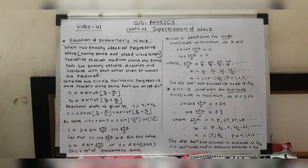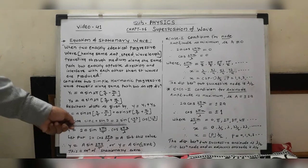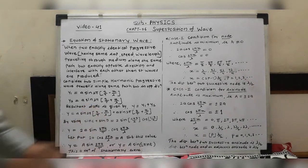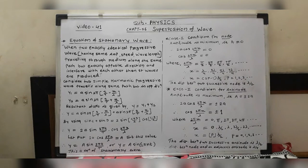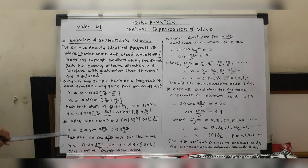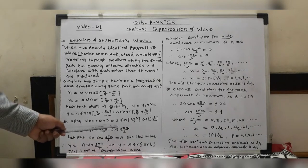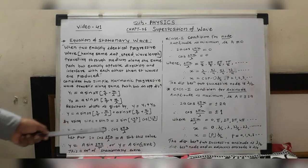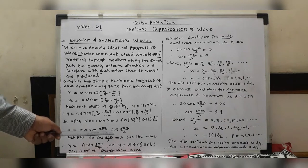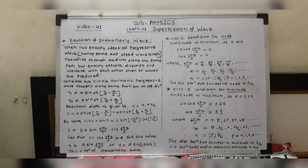By using the trigonometric relation sin C + sin D = 2 sin((C+D)/2) · cos((C−D)/2), we can simplify this equation. Applying this formula, y = 2a · sin(2πt/T) · cos(2πx/λ), because the x/λ terms cancel in the sin part, and the t/T terms cancel in the cos part.